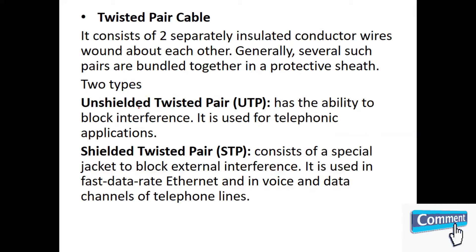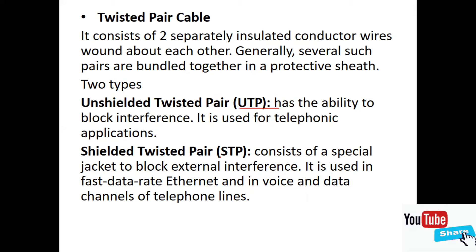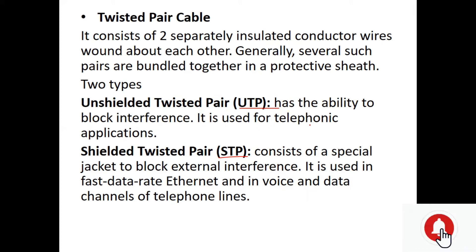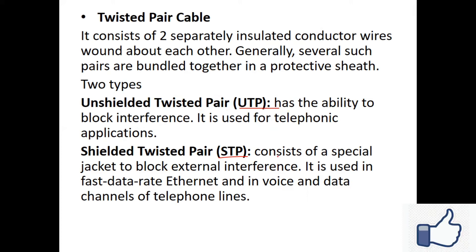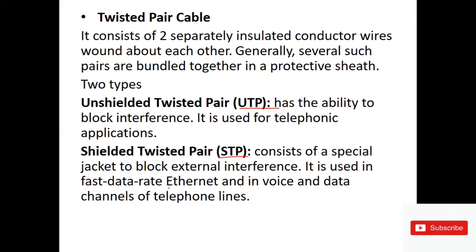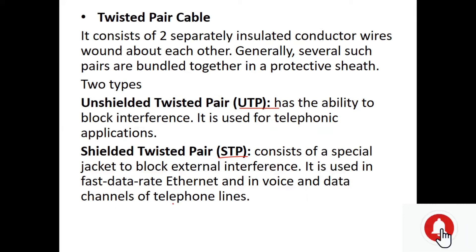There are two types of twisted pair cable: unshielded twisted pair (UTP) and shielded twisted pair (STP). Unshielded twisted pair has the ability to block interference and is used for telephonic applications. Shielded twisted pair uses a special jacket to block external interference and is used in fast data rate ethernet, and in voice and data channels of telephone lines.